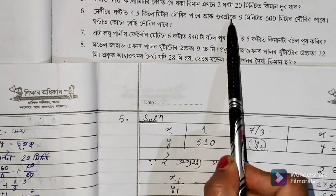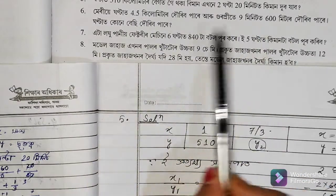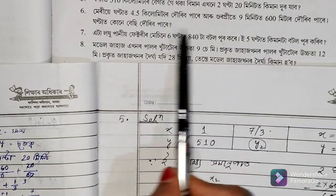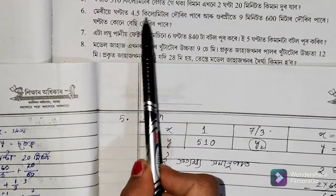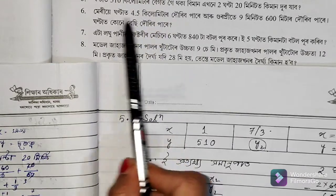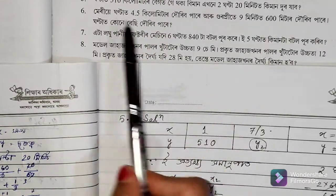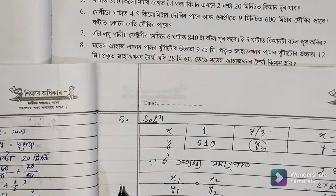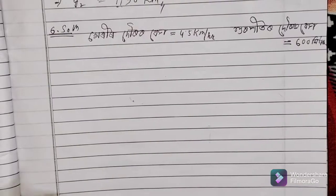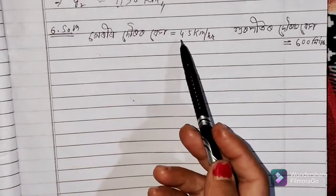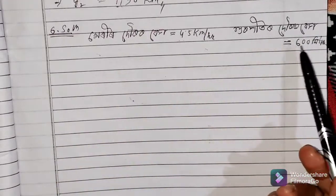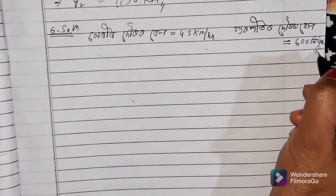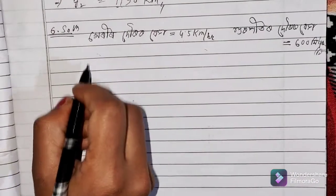If you have 1.5 meters per minute and a thousand kilometers, then you can have a thousand kilometers. This is the first time you can write about 4.5 kilometers per hour, and the other means 6 kilometers per minute.